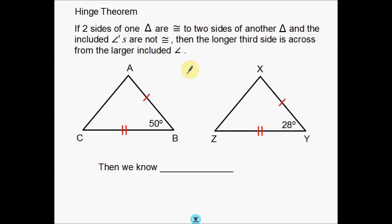Now obviously when you read all the way through that it's a little bit confusing, but let's get through this piece by piece. 'If two sides of one triangle are congruent to two sides of another triangle' — so notice my pictures down here. One tick mark and one tick mark: there's my first pair of congruent sides. Two tick marks here and two tick marks here: there's my second pair of congruent sides.